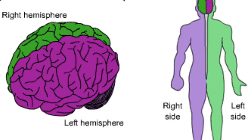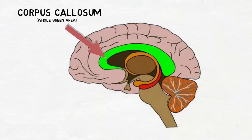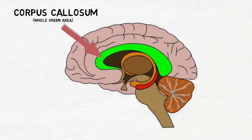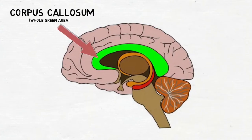Your brain is divided into two hemispheres. Your left controls your right side, and your right controls your left side. And they're both tied together in a neat little package by the totally awesome corpus callosum.